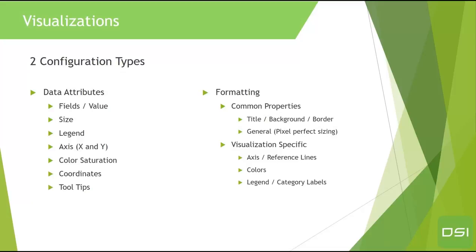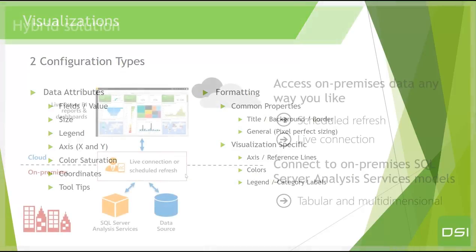From a formatting point of view, there's the general stuff — title, background, border — but each visualization has a specific set of formatting options, whether it's axis and reference lines, the types of colors, legends, categories. You can turn things on and off for the most part to get the look the way that you want it.